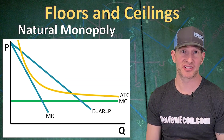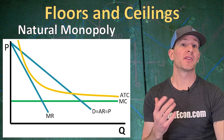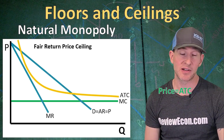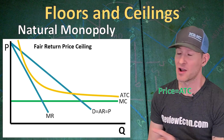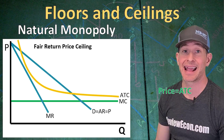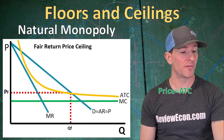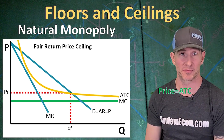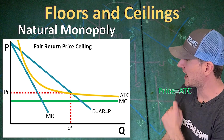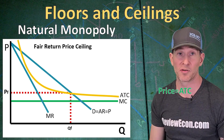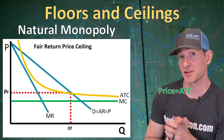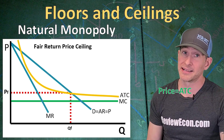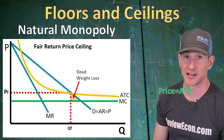Now, with a price ceiling, the government could actually limit that deadweight loss. If the government were to impose what is called a fair return price, that would mean the price would be equal to the average total cost curve — found where the demand curve intersects the ATC. If the government did that, we would see QF, the fair return quantity, and PF, the fair return price. With this government price ceiling, we would have a higher quantity produced and a lower price. But we still aren't allocatively efficient because the price is still above marginal cost, and as a result we still have deadweight loss — though it is a much smaller triangle.